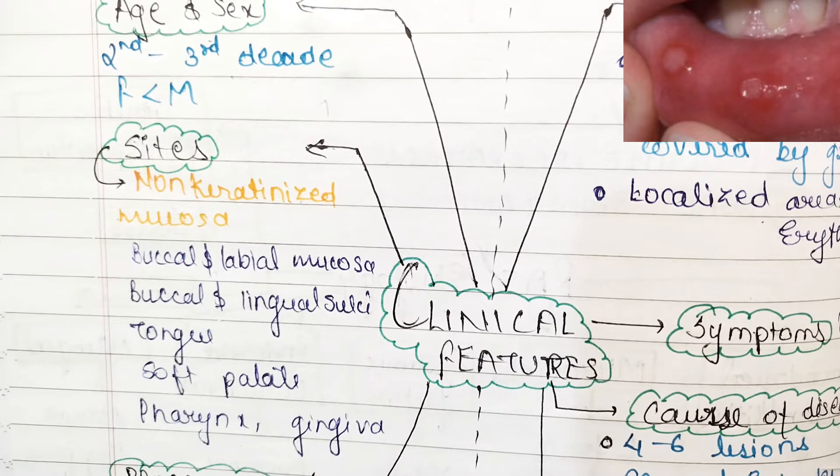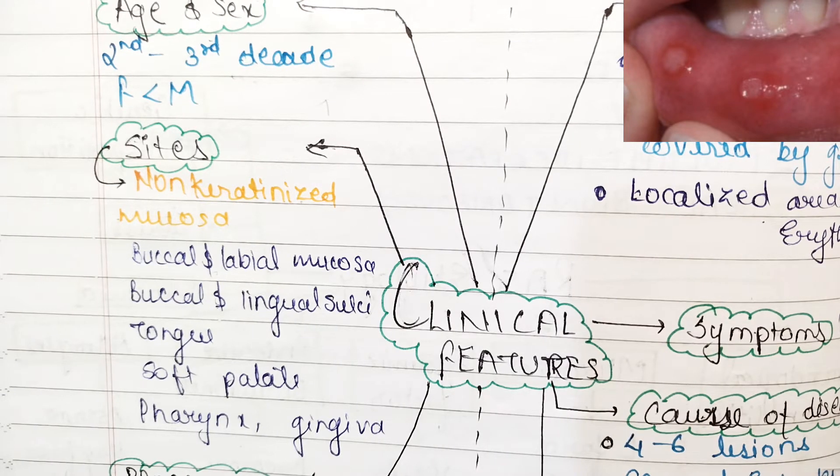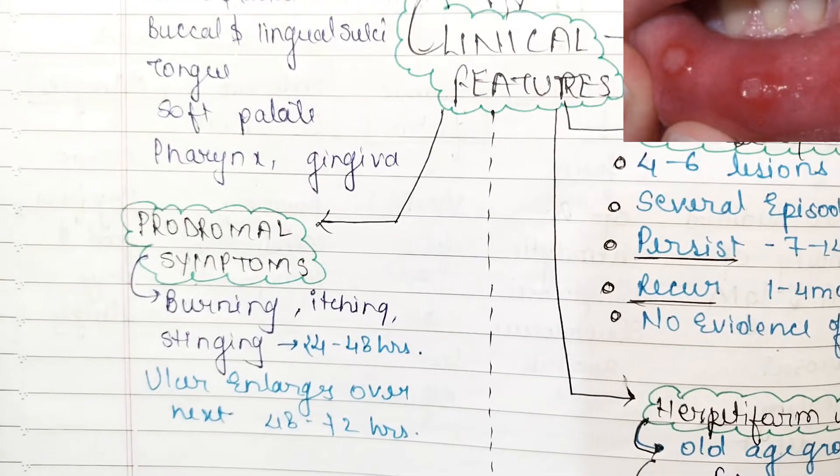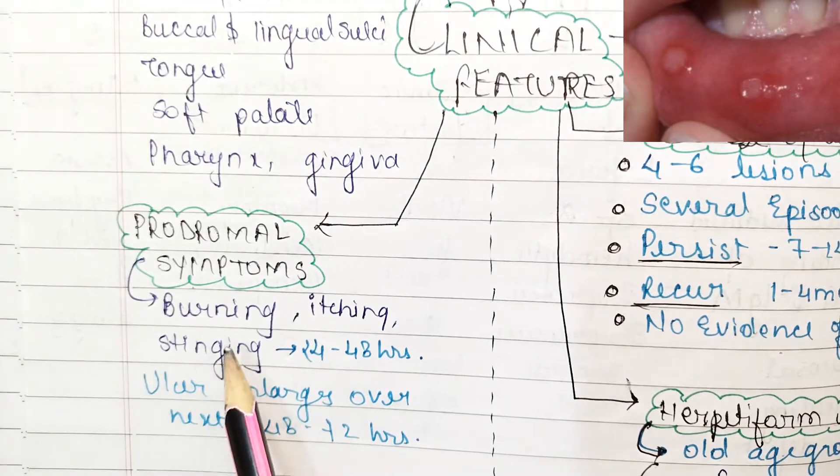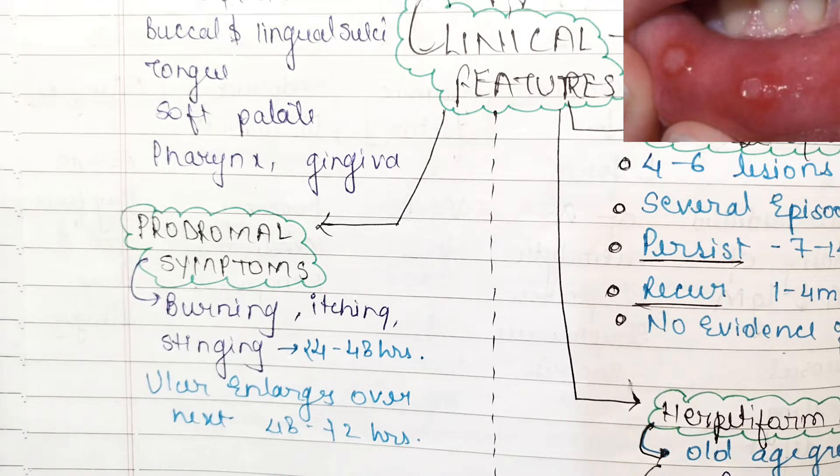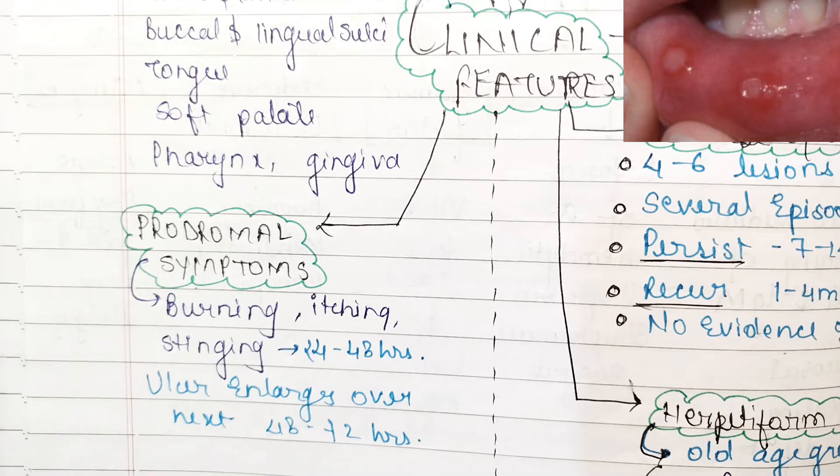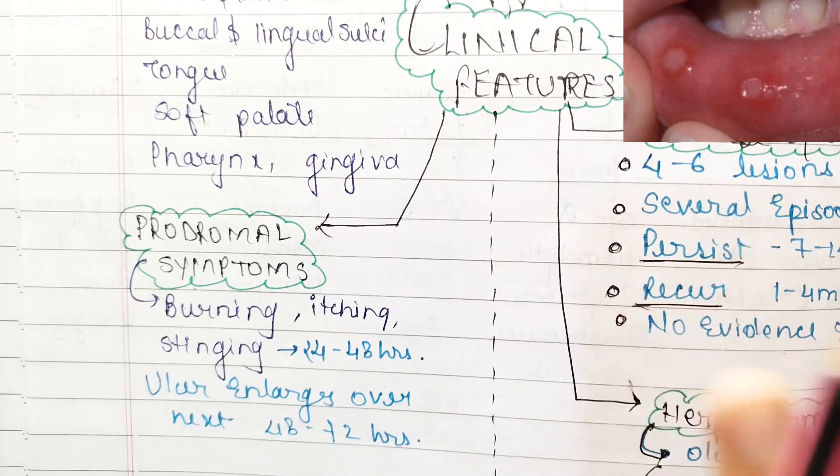These are some sites on which you can see aphthous stomatitis. Now coming to prodromal symptoms, the patient will be complaining of burning sensation, itching and stinging for 24 to 48 hours. After 48 hours these ulcers will get enlarged over 48 to 72 hours.